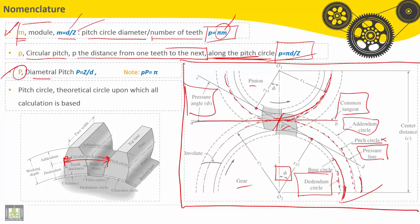Capital P is called the diametral pitch. It equals Z into D. So we have small P, which is the circular pitch, and capital P, which is the diametral pitch.